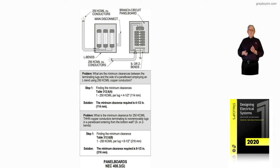Now the next question basically is asking, what would be your distance for that S or Z-bend? Well, in step one, now you're using Table 312.6B instead of 312.6A.